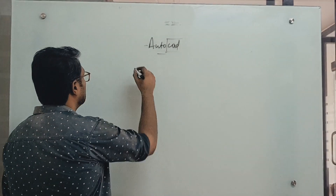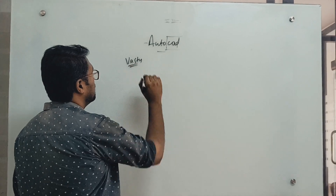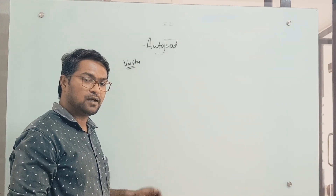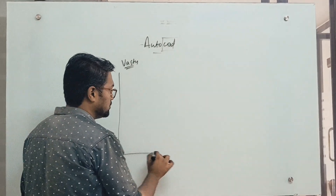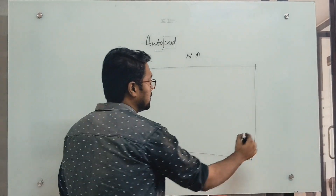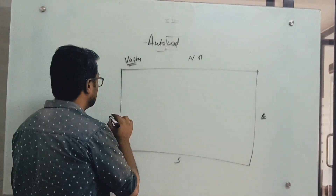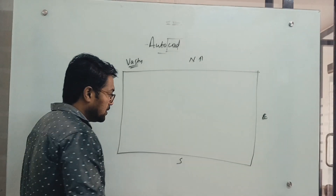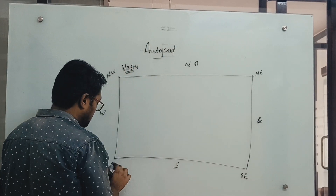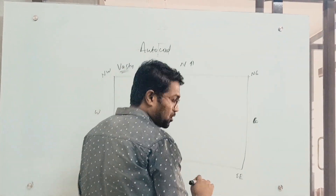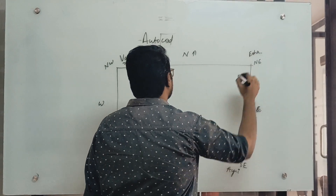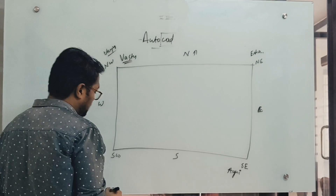Next topic is pass groups. To draft any plan for commercial or residential buildings, we need to follow some rules — we call these pass groups. I'll show you the basic pass group. This is the north direction and south direction; this is east and this is west — these are the main directions. Coming to the corners: this is south east, north east, north west, and south west. In local languages, we call this corner 'Agni', this is 'Eshan', this is 'Vayu', and this one 'Nairutya'.